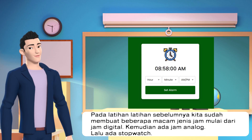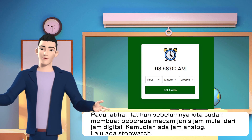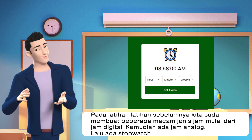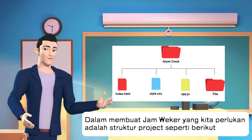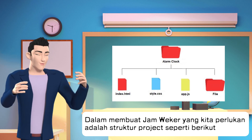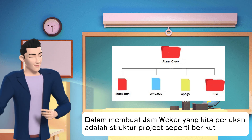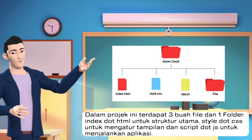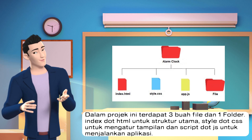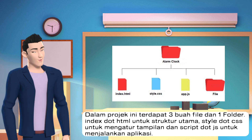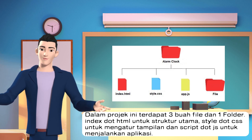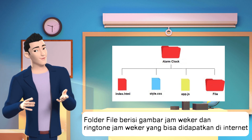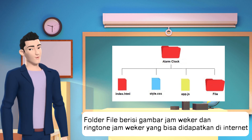In the previous exercises we have made a digital clock, an analog clock, and a stopwatch. In making an alarm clock, what we need is a project structure like the following. In this project there are three files and one folder: index.html for the main structure, style.css to set the appearance, and a .js script to run the application. The file folder contains images of the alarm clock and alarm clock ringtones that can be found on the internet.